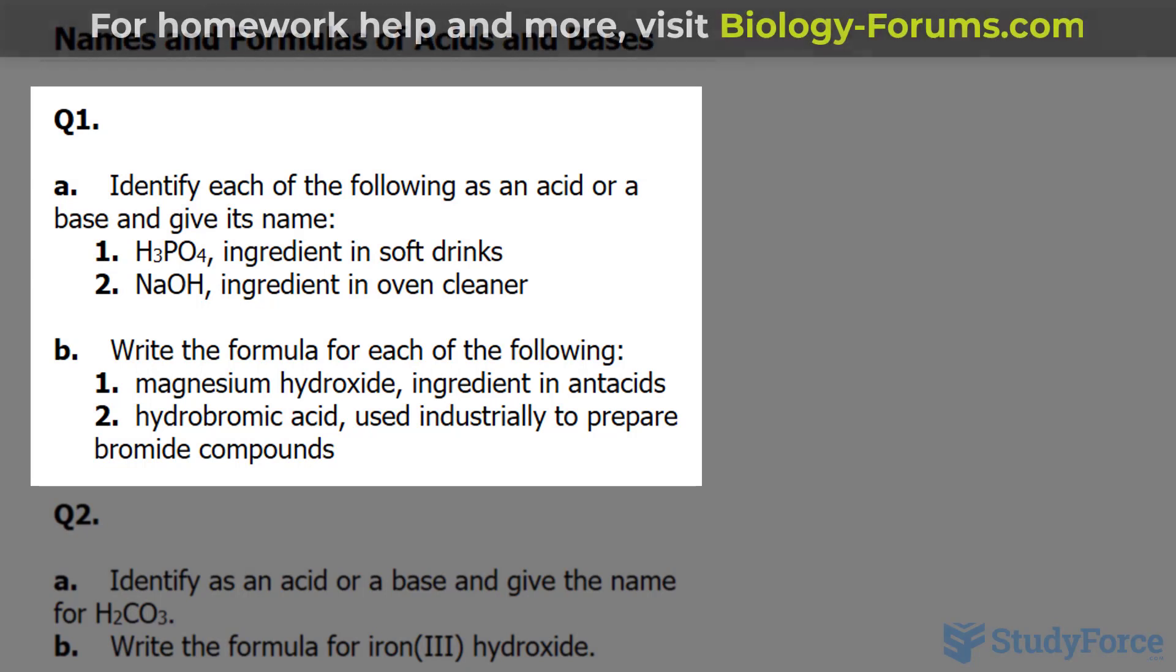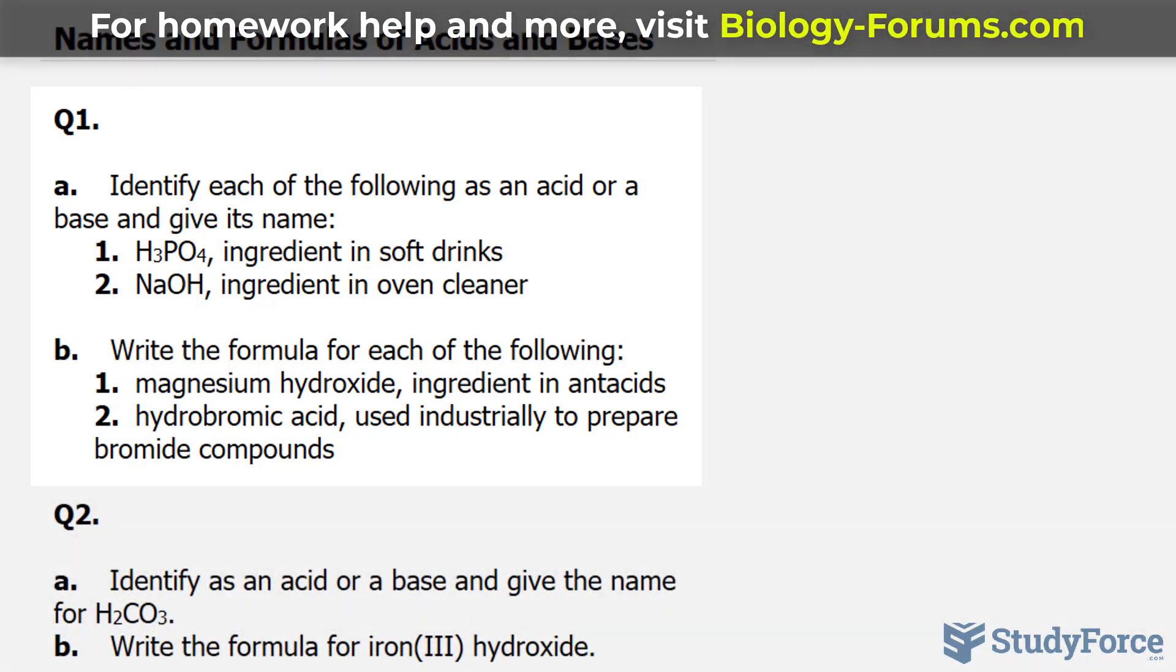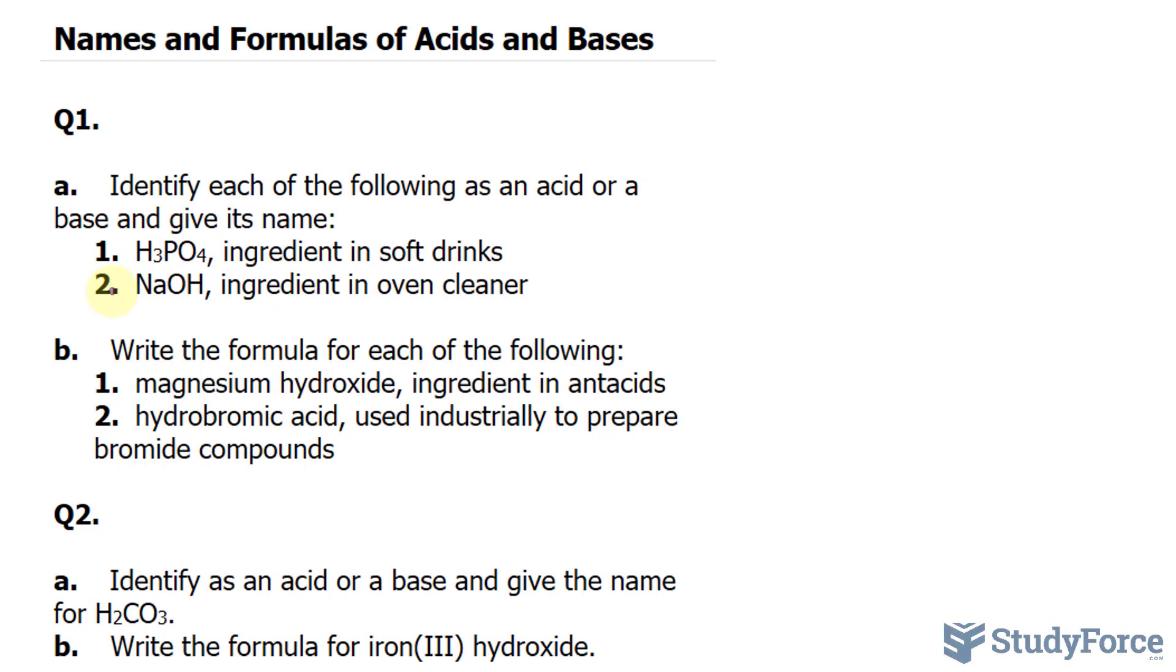Starting with 1, we have H3PO4, an ingredient in soft drinks. This molecule has a polyatomic ion, phosphate. When phosphate and hydrogen come together in this ratio, we form phosphoric acid.